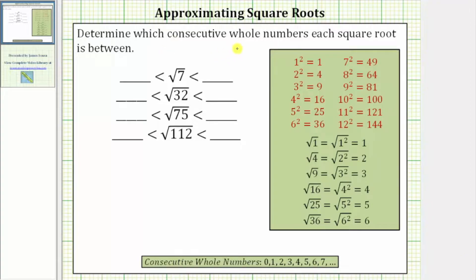We are asked to determine which consecutive whole numbers each square root is between. Looking at the given square roots, notice how the radicands, or the numbers under these square roots, are not perfect squares, and therefore these square roots will not simplify perfectly to whole numbers. Looking at the notes on the right, we have a list of perfect squares in red, several examples showing the square roots of perfect squares simplify to whole numbers, and a list of consecutive whole numbers.